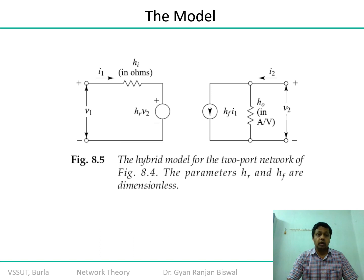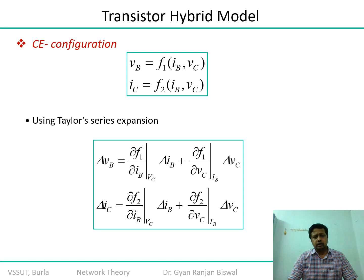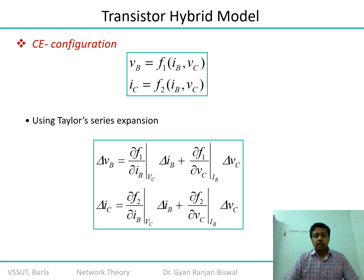In the transistor model, the voltage source corresponds to the reverse hybrid parameter Hr (H12), and the current source corresponds to the forward hybrid gain Hf (H21). The common emitter configuration is primarily used to design power amplifiers because it provides moderate voltage and current amplification simultaneously.